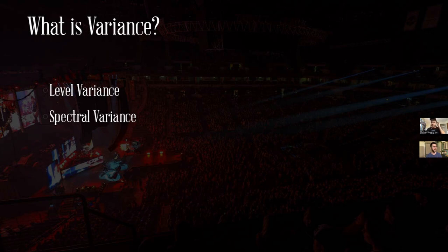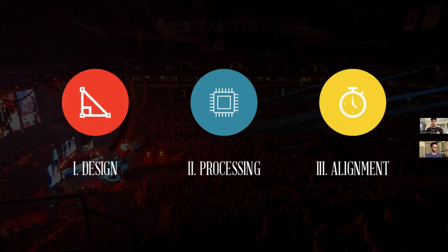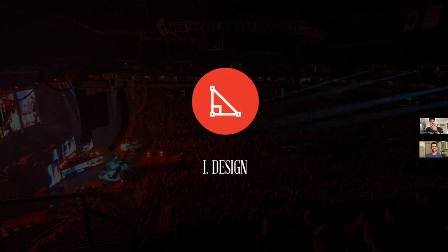So you want the front row and the nosebleeds to both walk away feeling like they had a great show. Exactly. That's done in basically three portions: design, processing, and alignment. Design and processing should get you 92% of the way there — we're going to add the last 1 dB in the alignment stage. That's the lion's share of this discussion.